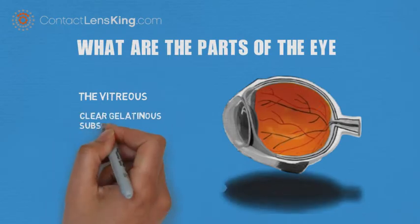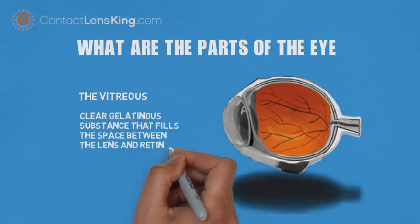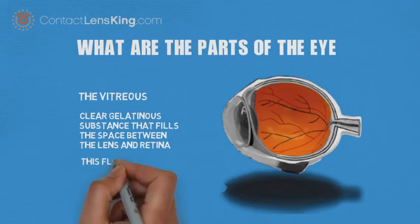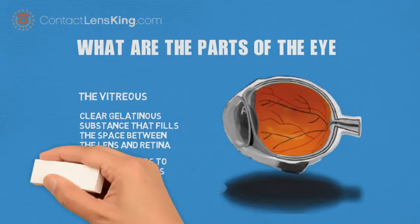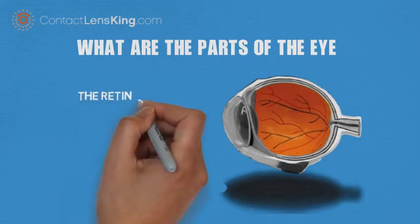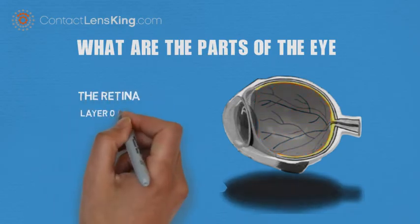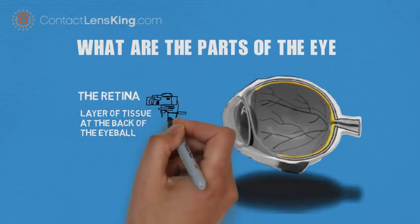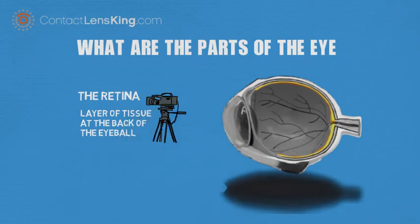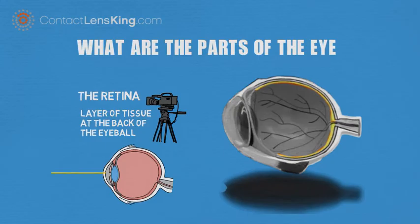The vitreous. This is the clear gelatinous substance that fills the space between the lens and retina. This fluid helps to maintain the eye's shape. The retina is a layer of tissue at the back of the eyeball, acting like the film of a camera. It contains cells that are sensitive to light — both black and white as well as colored — and converts these light stimuli into electrical nerve impulses, sending them to the optic nerve.